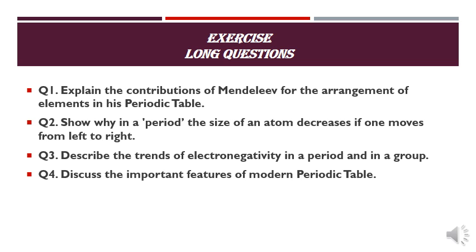Discuss the important features of the modern periodic table. A modern periodic table has important features. With the help of headings from the lectures, significant features include atomic number, group discussion, and period discussion. There are seven important features that have been explained — make sure to cover all seven.